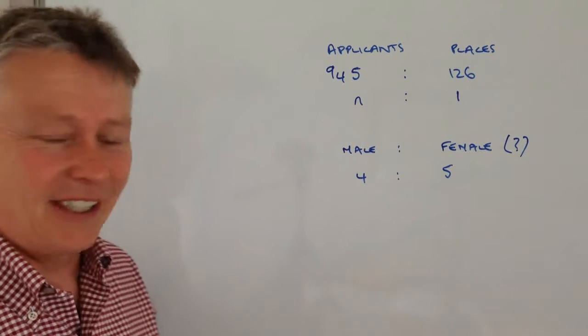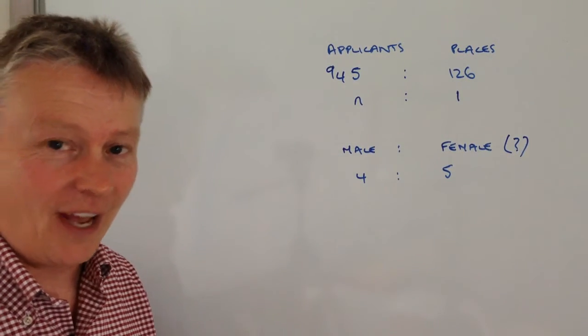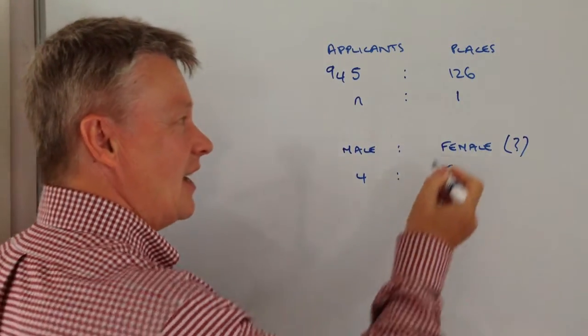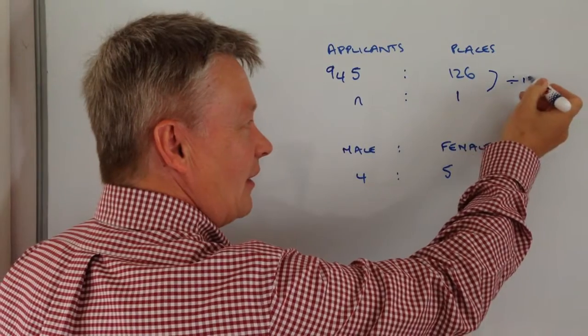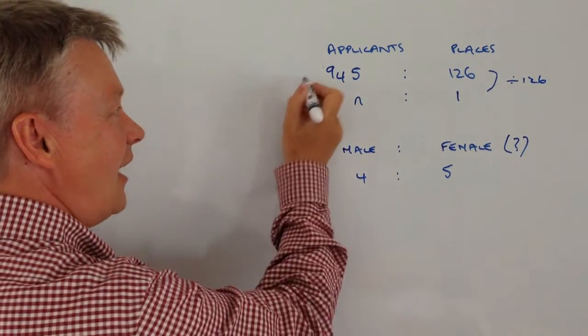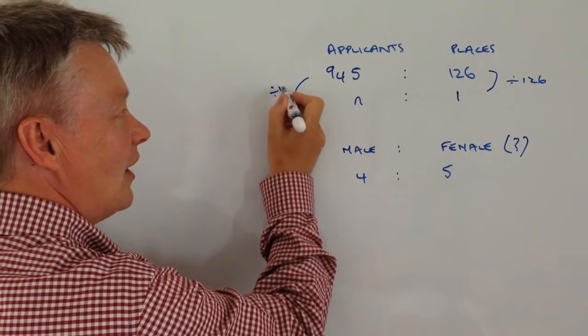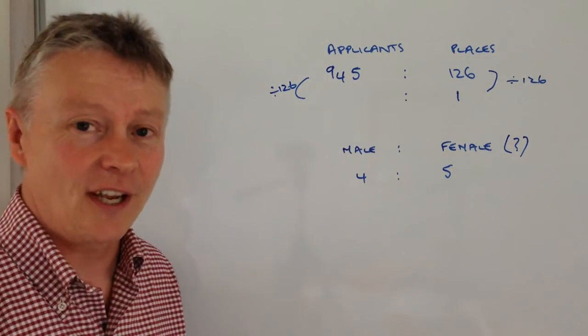It really doesn't mean anything other than just simplify what you've got there. So in other words, what we're saying is that 126 divided by 126 is equal to 1. So if we do exactly the same on this side, we divide 945 by 126.